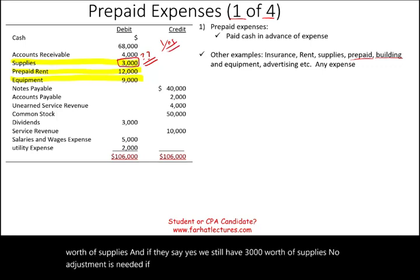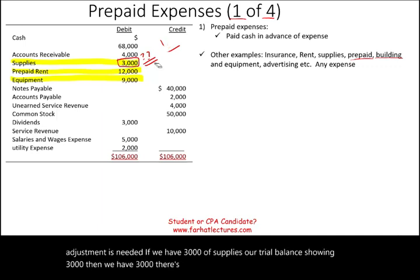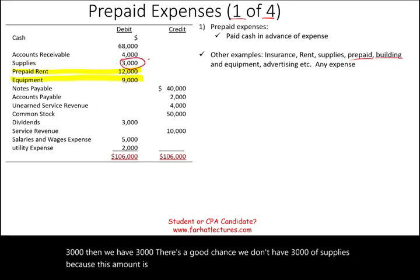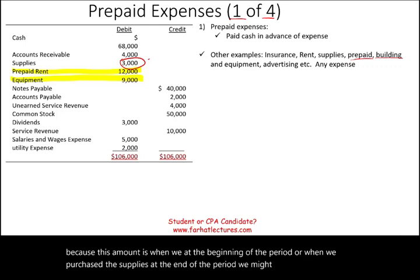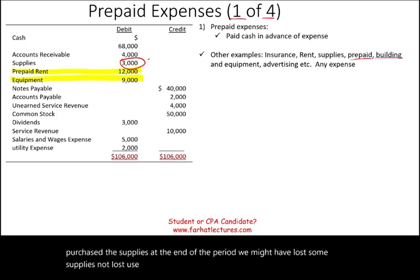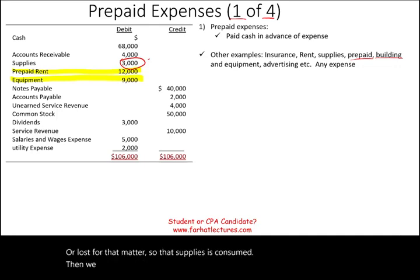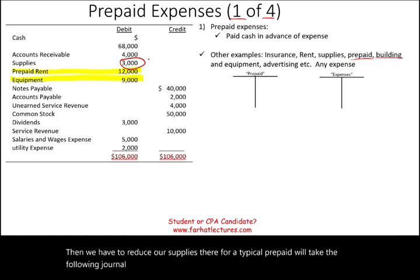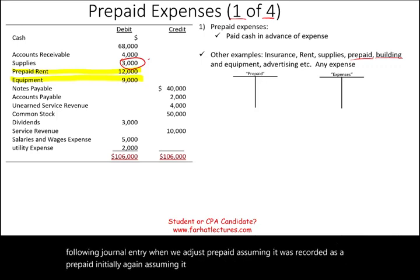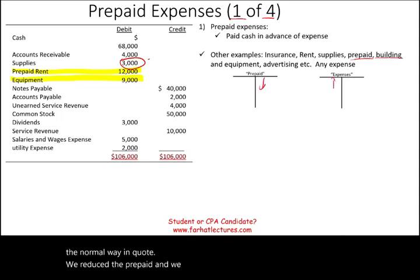If we have $3,000 of supplies on the trial balance, there's a good chance we don't actually have $3,000 because that amount reflects when we purchased the supplies. At the end of the period, we may have used some of them. So if those supplies are consumed, we have to reduce our supplies balance. A typical prepaid adjusting entry, assuming it was recorded as a prepaid initially, will reduce the prepaid and increase the related expense.